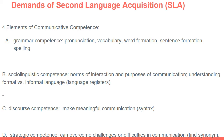There are four elements of communicative competence. Grammar competence includes pronunciation, vocabulary, word formation, sentence making, and spelling. Sociolinguistic competence involves using communication for particular purposes, understanding formal versus informal language — knowing what language to use at a party versus in the classroom or when writing an academic paper — and understanding language registers, such as recognizing different accents while still understanding the speaker's meaning.